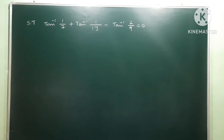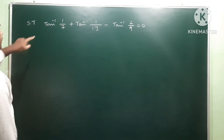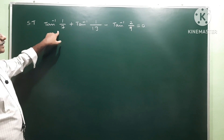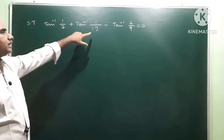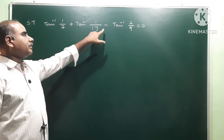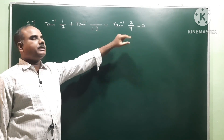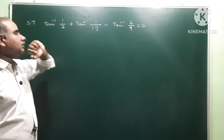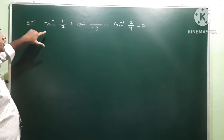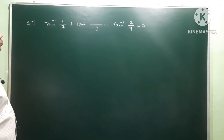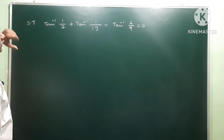Okay, next one. Show that tan inverse 1 by 7 plus tan inverse 1 by 13 minus tan inverse 2 by 9 is equal to 0. We have to show that this value is equal to 0.